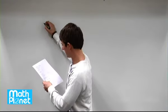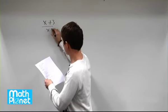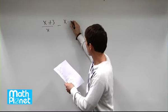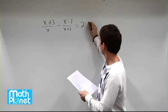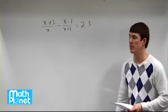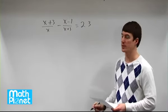We have this rational expression, x plus 3 over x minus x minus 1 over x plus 3, and it's an equation equals 23. We need to find the least common denominator and simplify so that we can solve for x here.